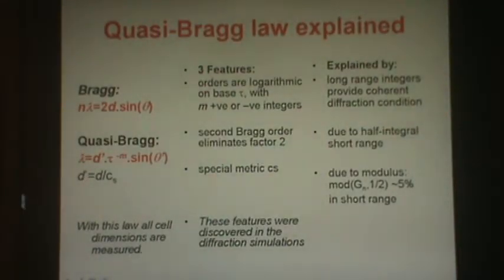And so with these features, we're able to construct the quasi-Bragg law. Here is the Bragg law. N lambda equals 2d sin theta. N is the order. Lambda is the wavelength. D is the interplanar spacing. Theta is the Bragg angle.